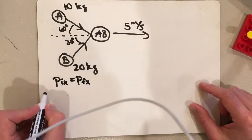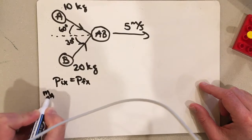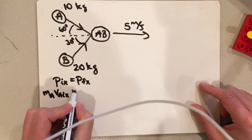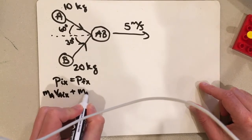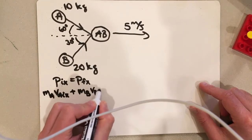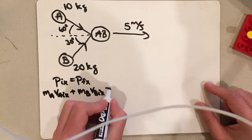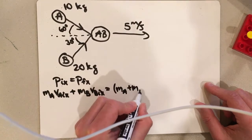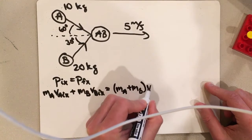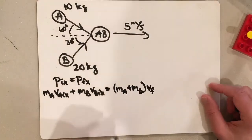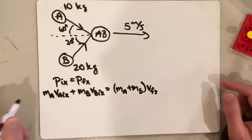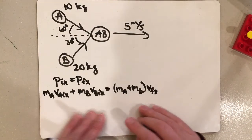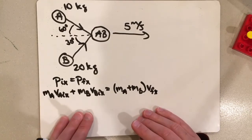So the momentum of A is, at least in the X direction, is MA times VA initial X. Then I have to take into account B's VB initial X. And these guys stick together. So that's MA plus MB V final, V final X. So that's the law of conservation of momentum as it applies to the X direction.